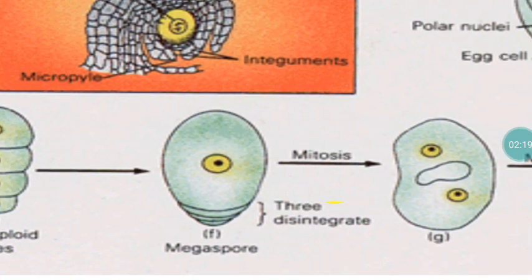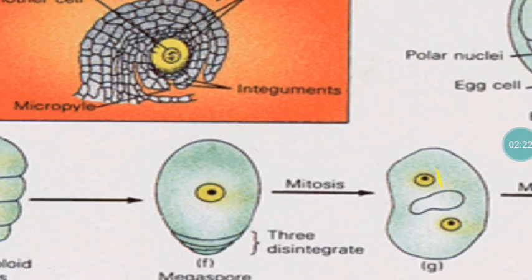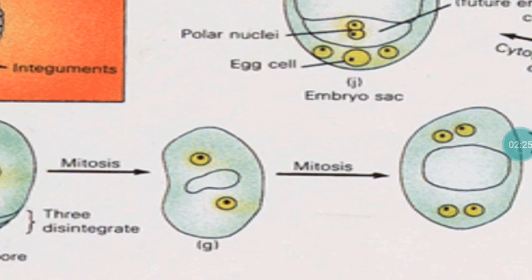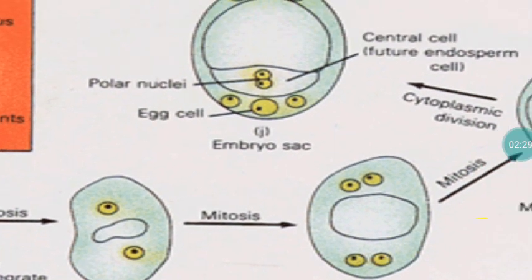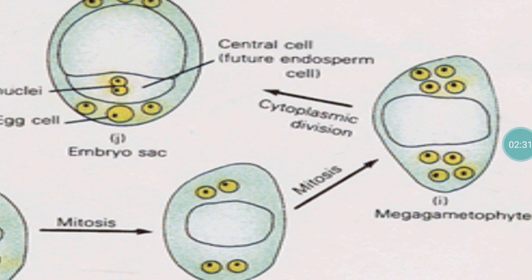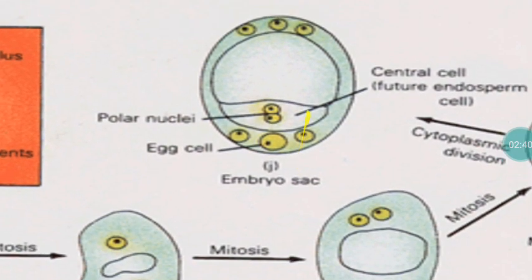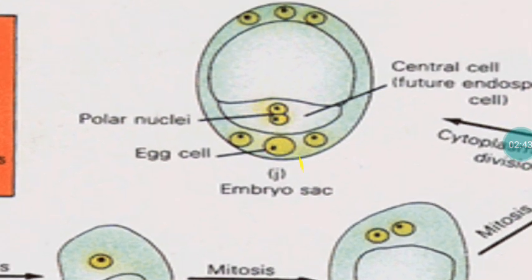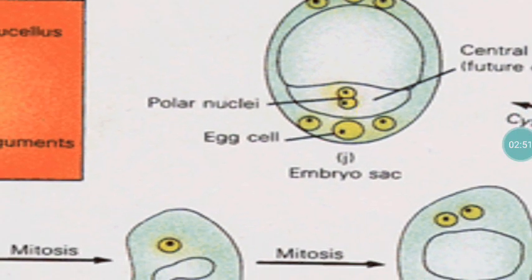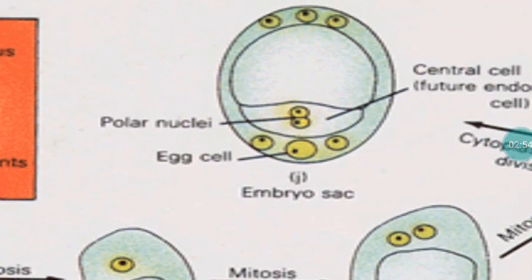The survived cell undergoes mitosis — multiplication — attaining a two-cell stage, then further rounds of cell division form a four-cell stage, then an eight-cell stage. After that, cytoplasmic division occurs, leading to formation of the mature embryo sac. The embryo sac consists of eight nuclei: three nuclei at one end, two nuclei in the middle, and another three nuclei at the other end.